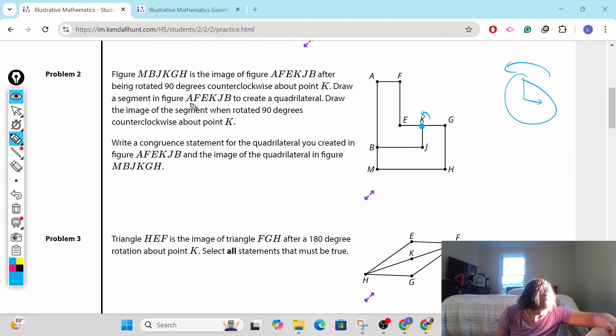Draw a segment in the figure A, F, E, K, J, B to create a quadrilateral. Draw the image of the segment when rotated 90 degrees counterclockwise around point K. So A, F, E, K, J, B. Listen to my marker, not what I say.